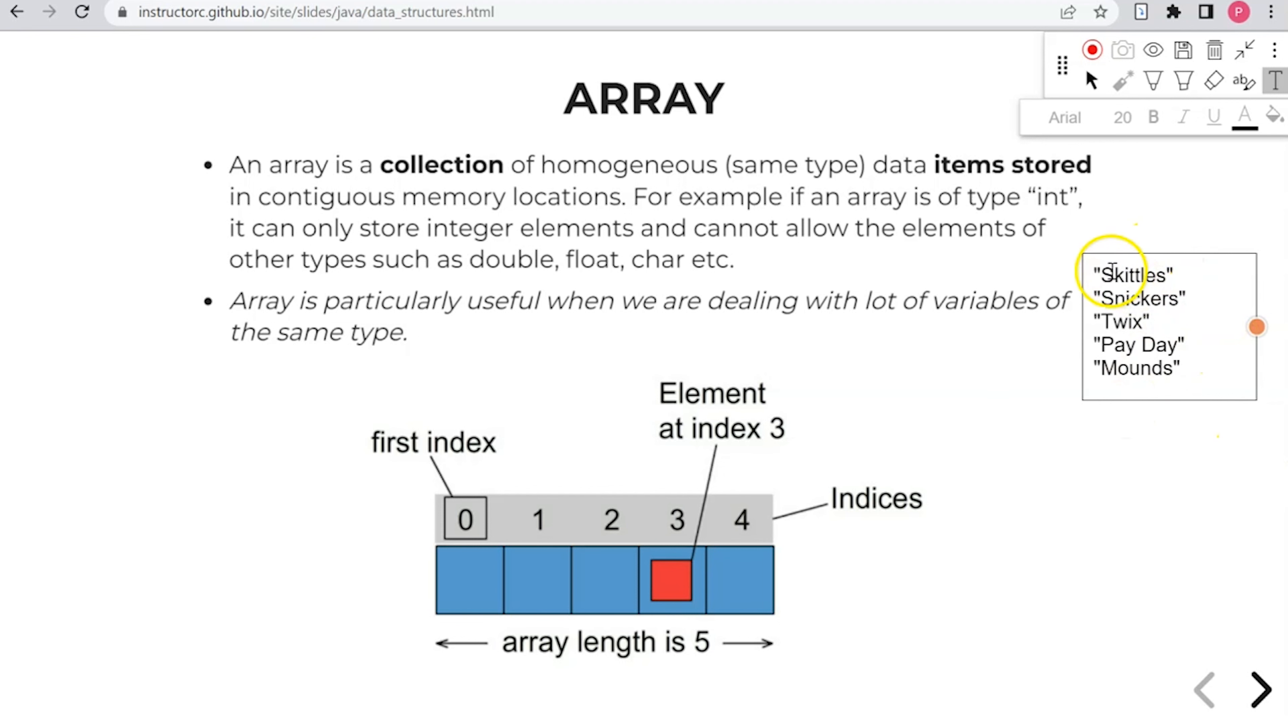Okay so in this case here we have a list. And typically if we had just a single variable, let's say for instance we had String and we say a bar, we can store one item into a bar, the variable bar. So we can say something such as Almond Joy. But with an array we can store multiple items into an array.